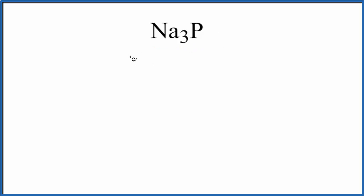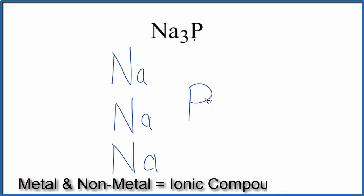Let's write the element symbols here. For Na, we have three of those, so we'll just put them on top of each other here. Then we'll put the phosphorus right here. Because sodium is a metal and phosphorus is a non-metal, we're going to have an ionic compound.